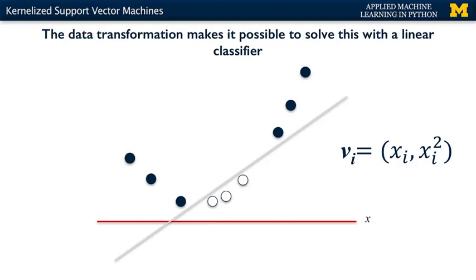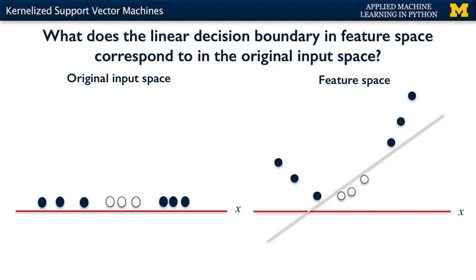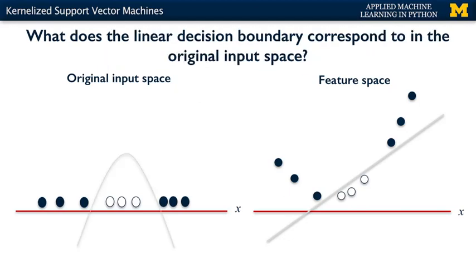We can now learn a linear support vector machine in this new two-dimensional feature space, whose maximum margin decision boundary might look like this here, to correctly classify the points. Any future one-dimensional points for which we'd like to predict the class, we can just create the two-dimensional transformed version and predict the class using this two-dimensional linear SVM. If we took the inverse of the transformation to bring the data points back to our original input space, we can see that the linear decision boundary in the two-dimensional space corresponds to the two points where a parabola crosses the x-axis.